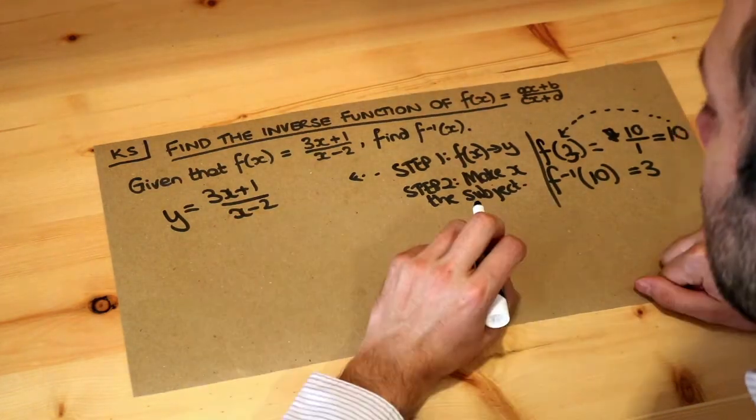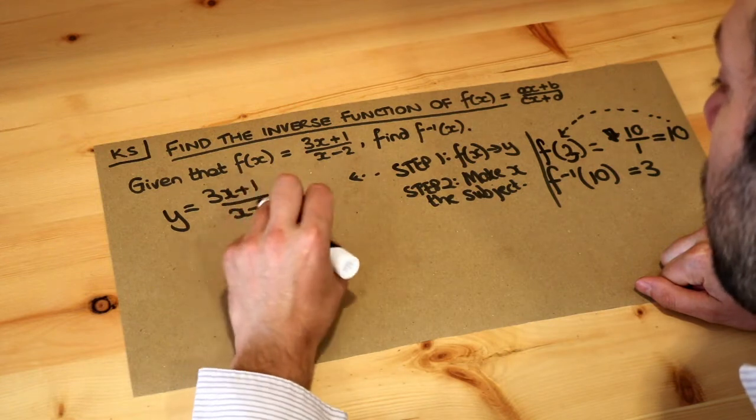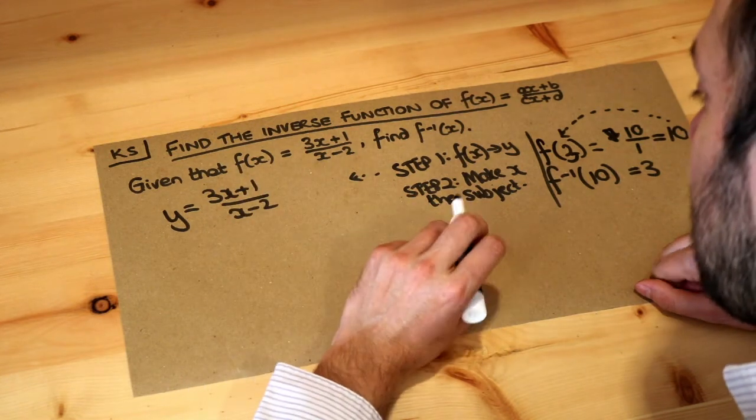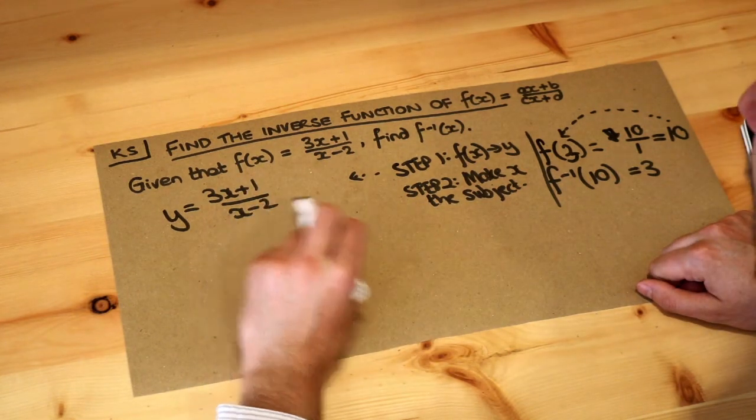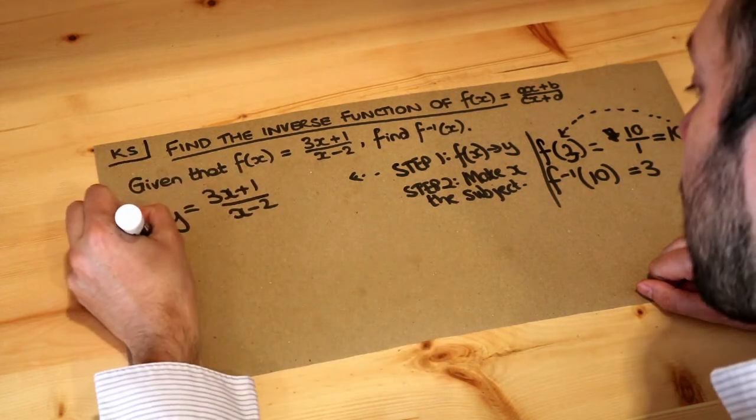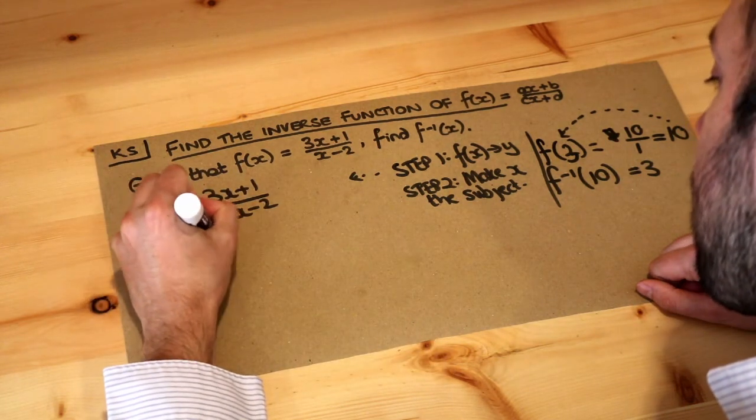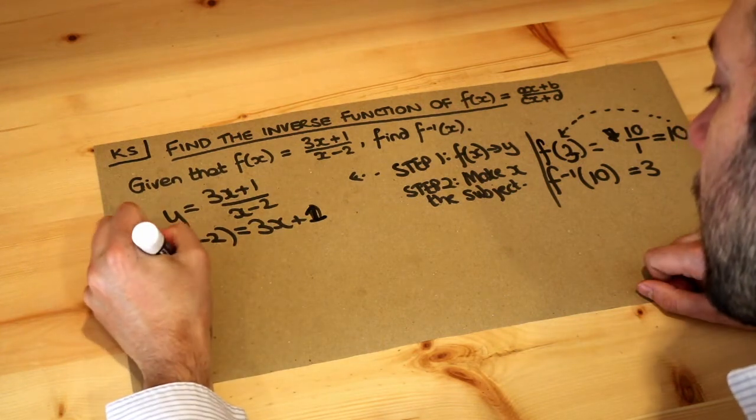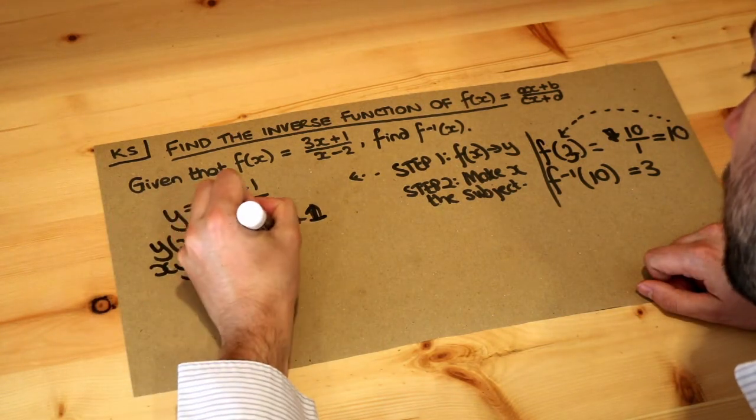So to make x the subject—we've dealt with expressions like this before when we've dealt with harder changing the subject stuff. Remember we multiply by the x minus 2 first because we don't like fractions. And then let's just expand out that bracket. So xy minus 2y equals 3x plus 1.